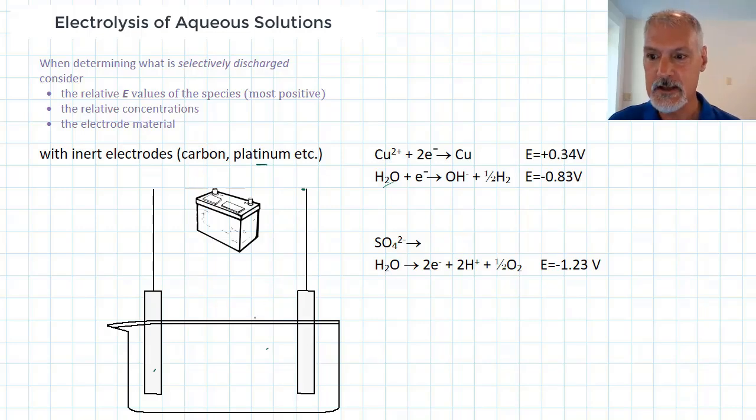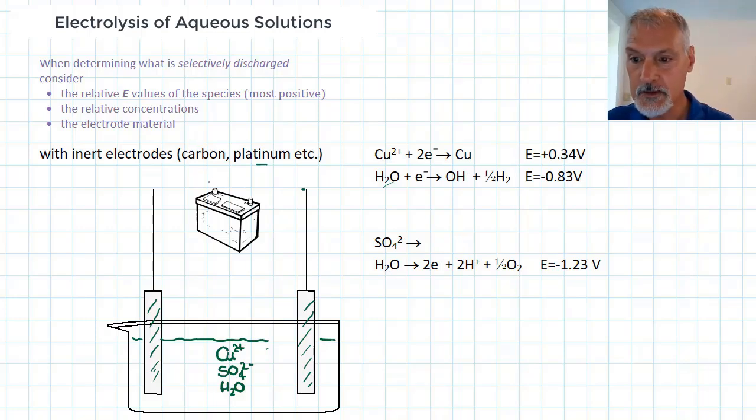So in my first example, I'm going to look at the electrolysis of a copper sulfate solution. So down in here we'll have copper ions, sulfate ions, and water itself. And our electrodes will be made out of an inert material - it could be carbon or platinum. And being inert, they're not going to get involved in the reaction.